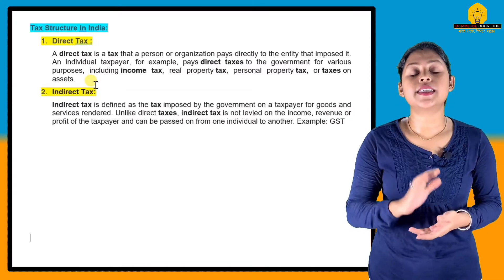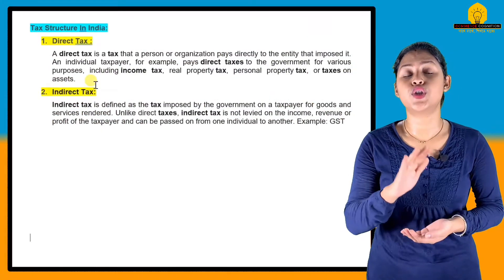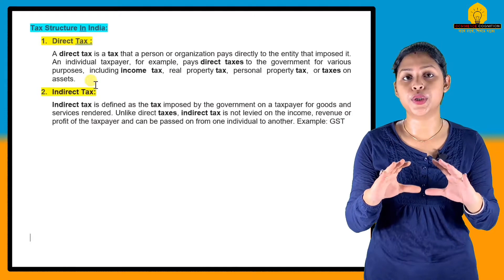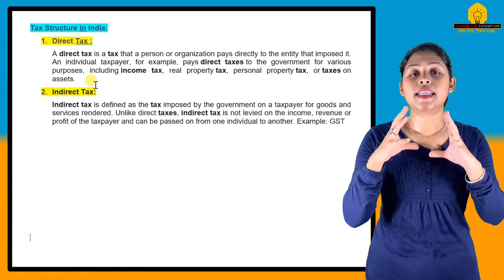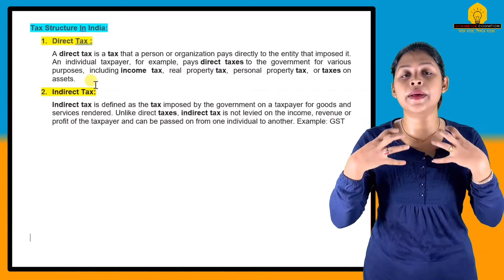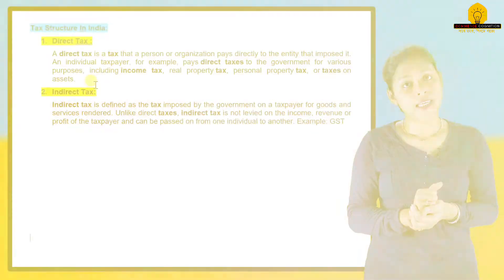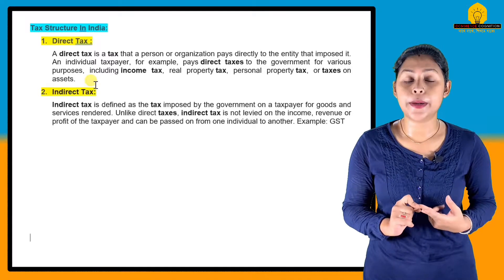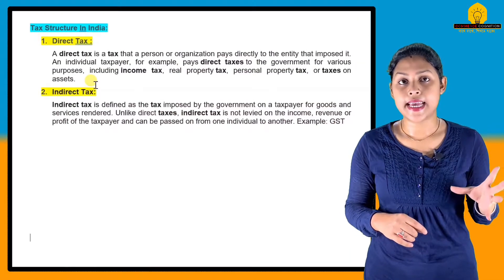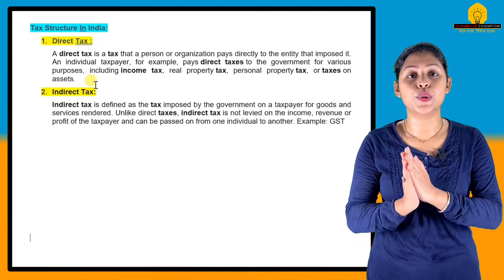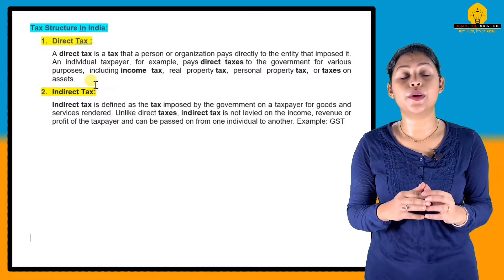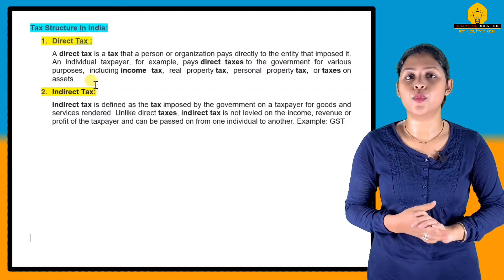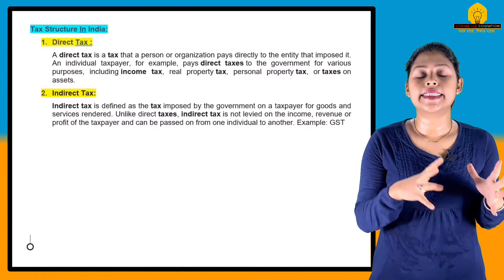GST is an indirect tax. When a product is sold, the manufacturing company collects payment including GST and passes it to the government. GST has two parts: the central part is CGST and the state part is SGST. GST is classified as an indirect tax because the consumer does not pay the government directly.